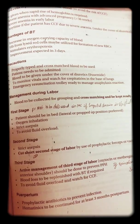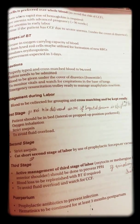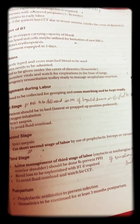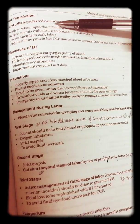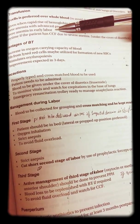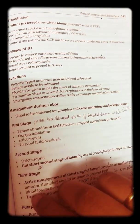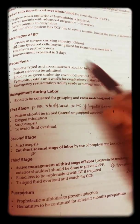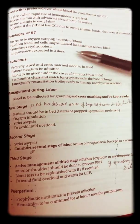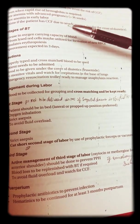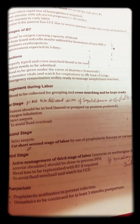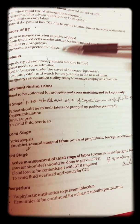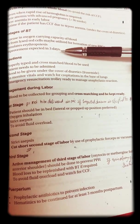For blood transfusion, only packed cell transfusion is recommended over whole blood to reduce the risk of congestive cardiac failure. It is given when rapid rise of hemoglobin is required, in severe anemia with advanced pregnancy, severe anemia and early labor, or when the patient has CCF due to severe anemia. Advantages include increasing oxygen carrying capacity; lysed red cells may be utilized for formation of new RBCs, stimulating erythropoiesis, with improvement expected in three days.